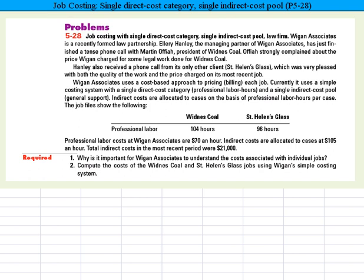This is problem 5-28, a job costing problem that has a single direct cost category as well as a single indirect cost pool, and it relates to a law firm.